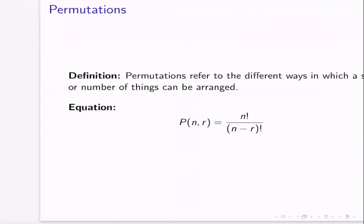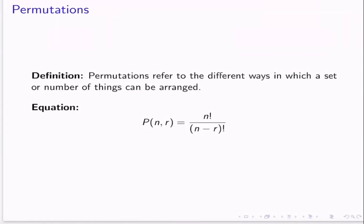Next, let's talk about permutations. Permutations refer to different ways in which a set or number of things can be arranged. In the factorial examples, we assumed every single person or object is going to be part of the arrangement. Whereas permutations are where we take a certain number of objects or people and rearrange just some of them, so there are two parts: actually arranging the selected people, and how many ways we can select those people in the first place.